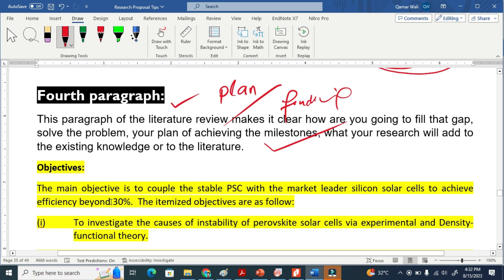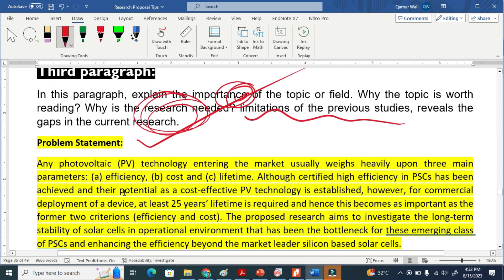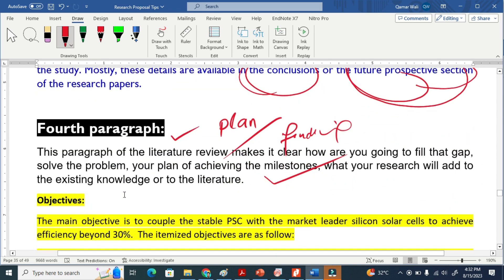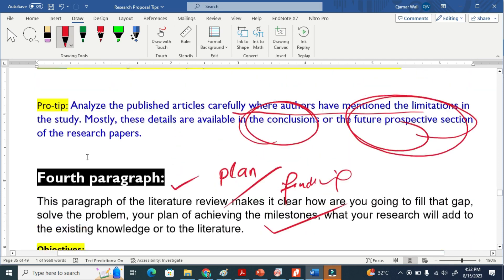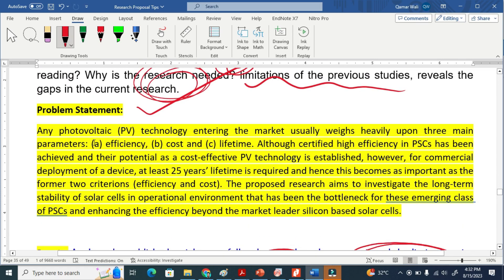These objectives and this problem statement are part of the literature review. And lastly, you have to explain the methodology - what methods, methodology you will be using to achieve those objectives and to solve that problem.